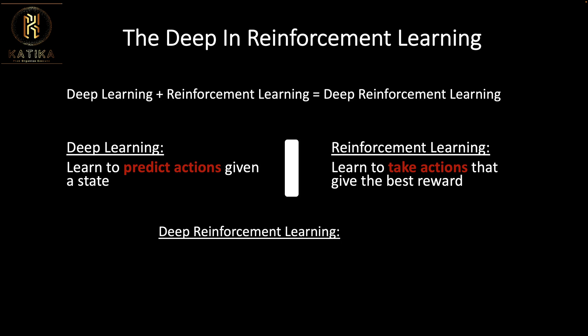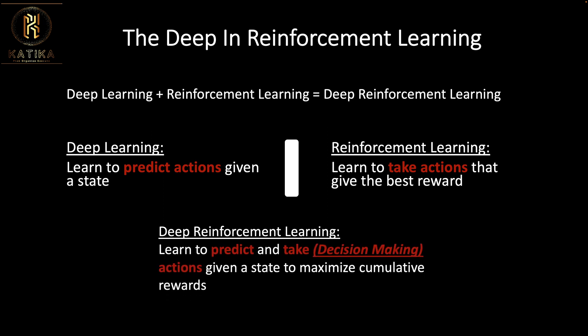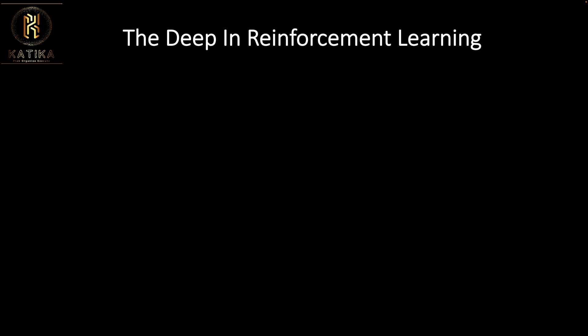When we combine deep learning and reinforcement learning, we get deep reinforcement learning. We can define it as: we learn to predict and take actions given a state in order to maximize our outcome. The combination of these two sub-fields produces powerful prediction and decision making.